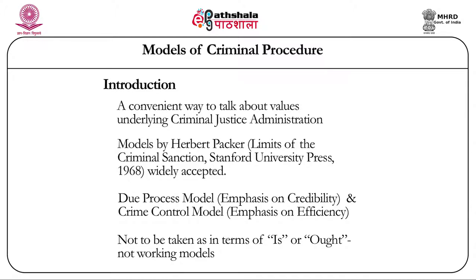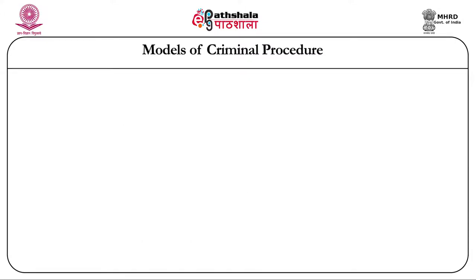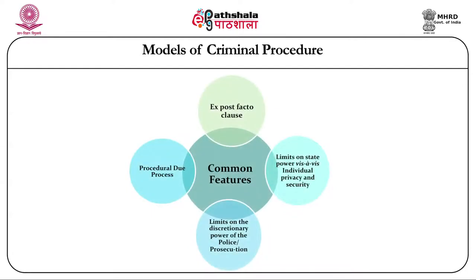Elements of both models may be present in the rules made by a particular system. Before analyzing the features or values underlying each model, we should consider whether there is common ground between the two. In other words, though they are said to be poles apart in terms of the values they possess, there are certain common features they share. We will discuss those first. There are four commonalities that can be traced.